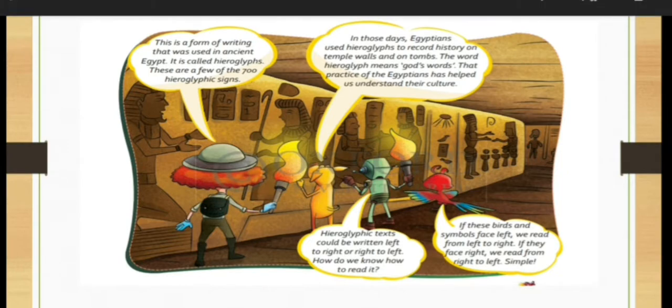That practice of the Egyptians has helped us understand their culture. Hieroglyphs text could be written left to right or right to left. So this was the language in which you can read from right to left as well and left to right as well. How do we know how to read it? If these birds and symbols face left, we read from left to right and if they face right, we read from right to left.